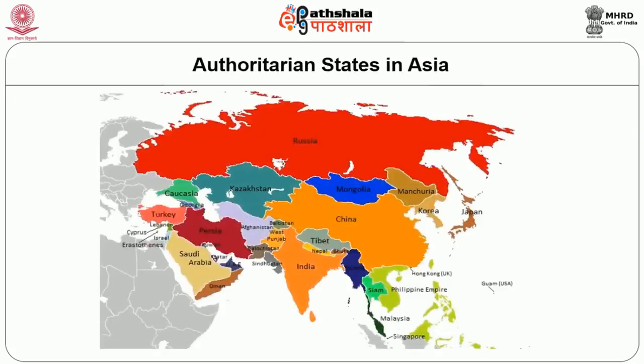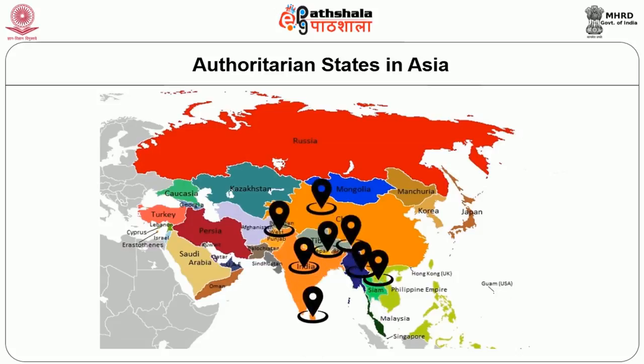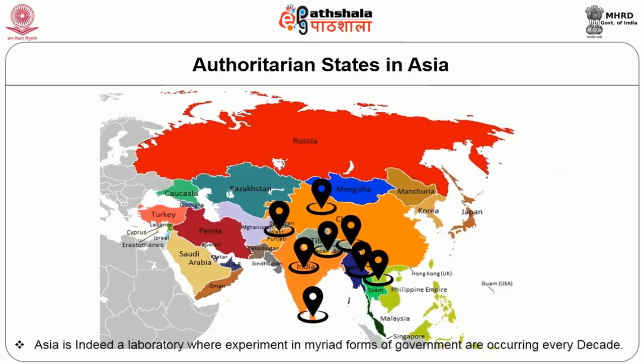Asia is a conjuncture of different forms of government, with countries as similar and dissimilar as India, Pakistan, Bangladesh, Nepal, Bhutan, China, Sri Lanka, and Burma. Asia is indeed a laboratory where experiments in myriad forms of government are occurring every decade.